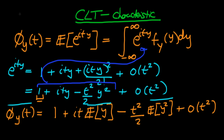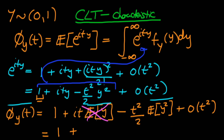Now let's say the random variable y has an unspecified distribution, only that it has mean 0 and variance 1. Under those circumstances, the characteristic function simplifies: the second term vanishes because E[y] = 0, and the third term becomes minus t²/2 times E[y²]. Since E[y] = 0, E[y²] equals the variance, which is 1. So the characteristic function reduces to 1 minus t²/2 plus stuff of order t².